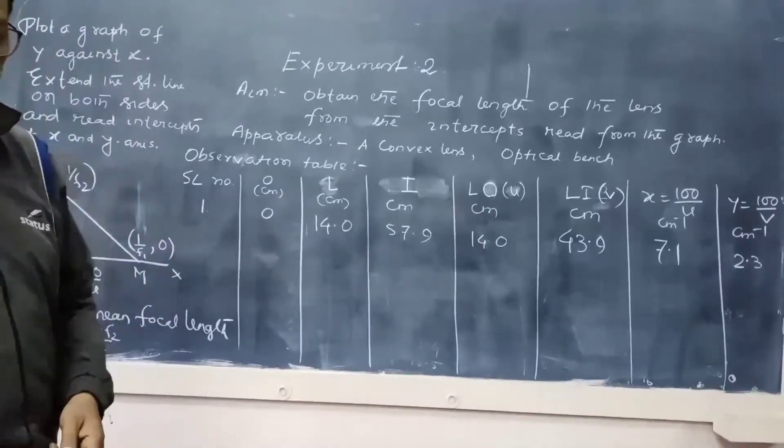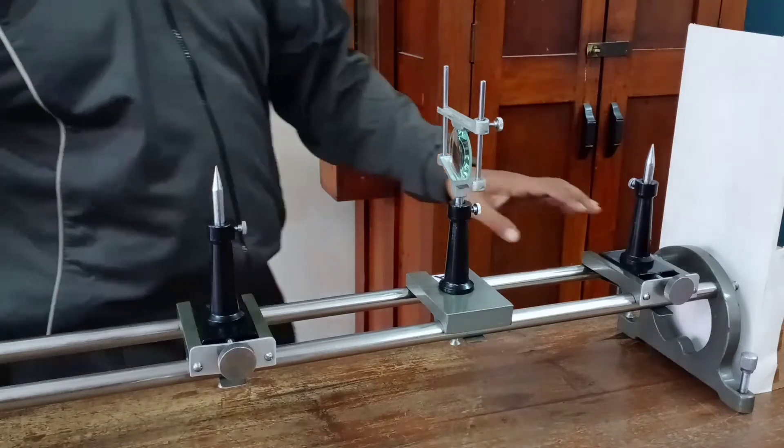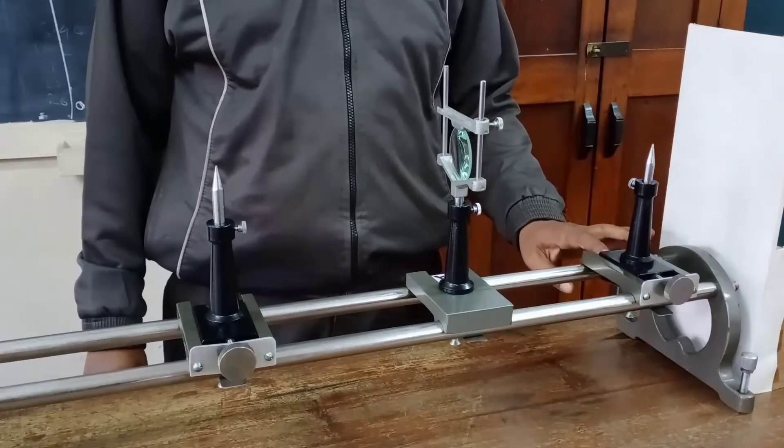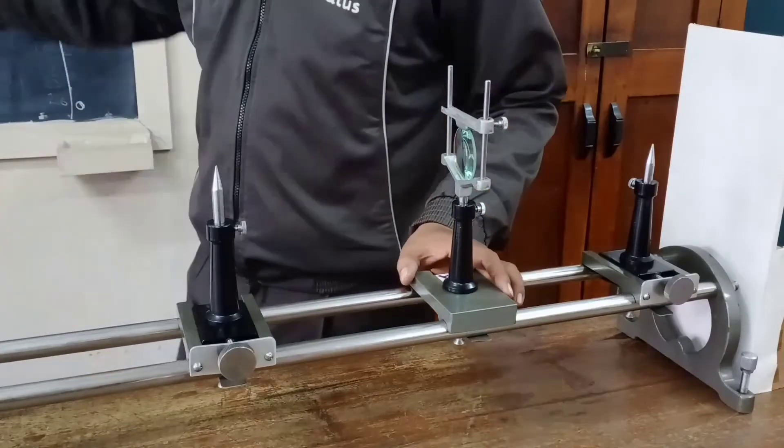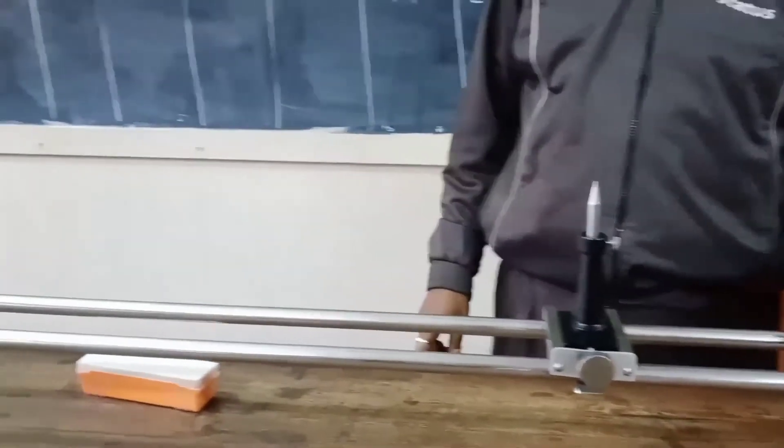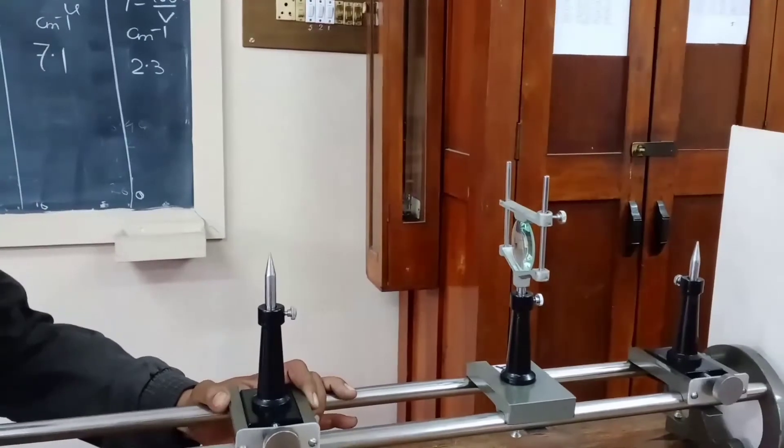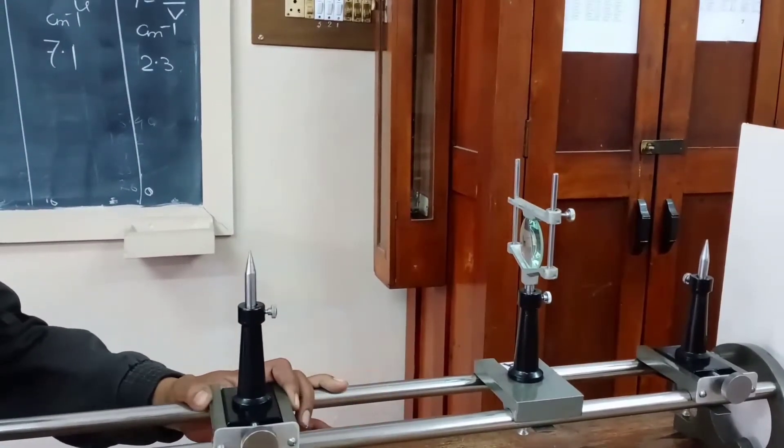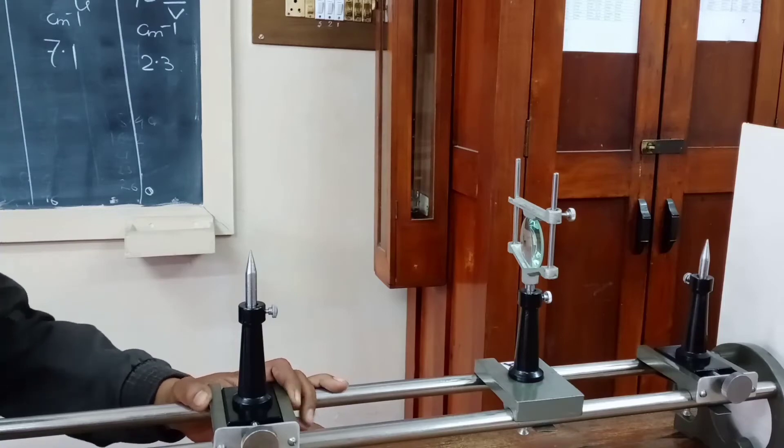To determine the focal length using this apparatus, just as previous, object is placed at 0 cm. The lens in the first observation is positioned at 14 cm and then the image field we have to position in such a way that a parallax-free image you can see in the field of view.